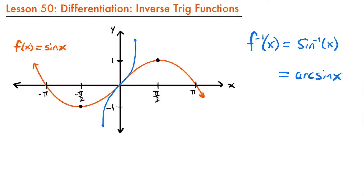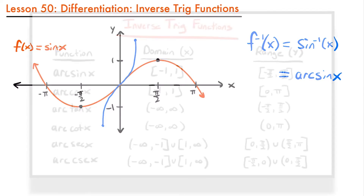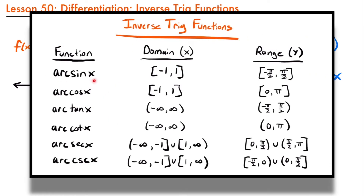There are six inverse trig functions in total: arc sine, arc cosine, arc tangent, arc cotangent, arc secant, and arc cosecant. Each has its own domain and range that results from restricting the domain of the original trig function. Feel free to pause the video and look over the domains and ranges of each of these functions.